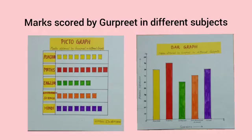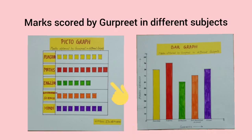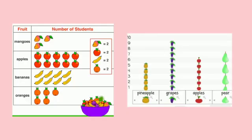Students, now we will understand the difference between pictograph and bar graph. In a pictograph, we represent data in the form of pictures. Firstly, we write the heading on which we want to make the pictograph. After this, we write symbols and show data in the form of pictures. Like in this pictograph, pictures are used to represent the marks scored by Gurpreet. We can represent a pictograph horizontally or vertically.